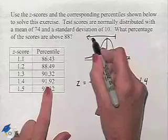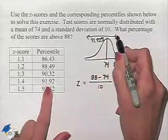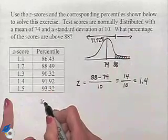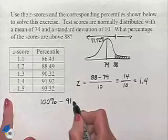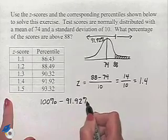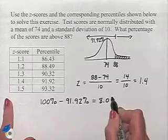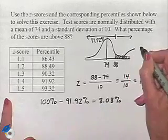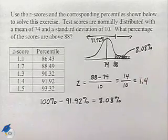So if we're now interested in what's going on to the right, then we're going to take our 100%, which would include everything, and subtract from it the 91.92 percent to come up with the percentage that will be under the curve to the right of 88. So this area is going to be representing 8.08 percent of the scores.